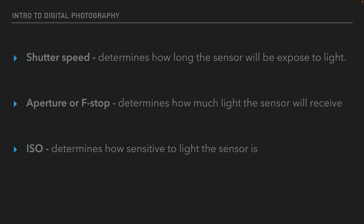ISO determines how sensitive the camera is to light. The lower the number on the ISO, the less sensitive to light it is, or the more light it's going to need to make an exposure. The higher the ISO, the more sensitive to light, or the less light it's going to need to make an exposure.